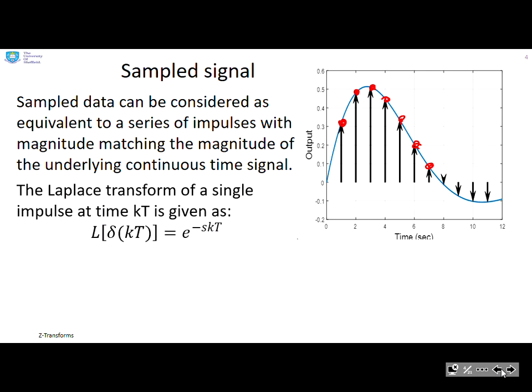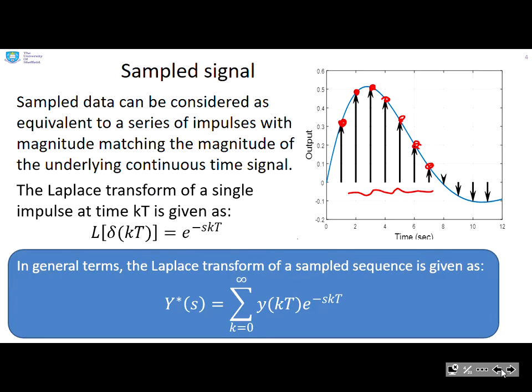We know from Laplace transforms that the Laplace transform of a single impulse at time k·T is given as e to the minus s·k·T. So if we have lots of impulses, we end up with an infinite sum. The Laplace transform — I've called it y-star of s to indicate it's a sampled signal — is the sum from k equals 0 to infinity of y(kT)·e to the minus s·k·T.